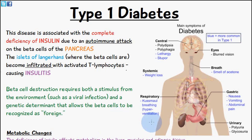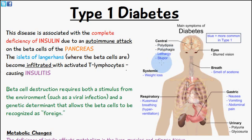The image on the right shows the main symptoms of diabetes. The ones in blue are more specific for type 1 diabetes: lethargy, stupor, weight loss, hyperventilation, a smell of acetone, nausea, vomiting, and abdominal pain.